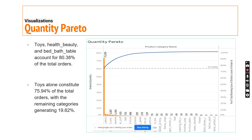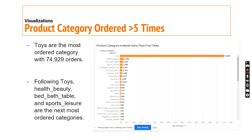Moving on to the quantity Pareto: as seen previously, toys, health beauty, and bed bath are contributing around 80 percent of the total orders, with toys alone constituting approximately 76 percent. The remaining categories are generating 19.62 percent.